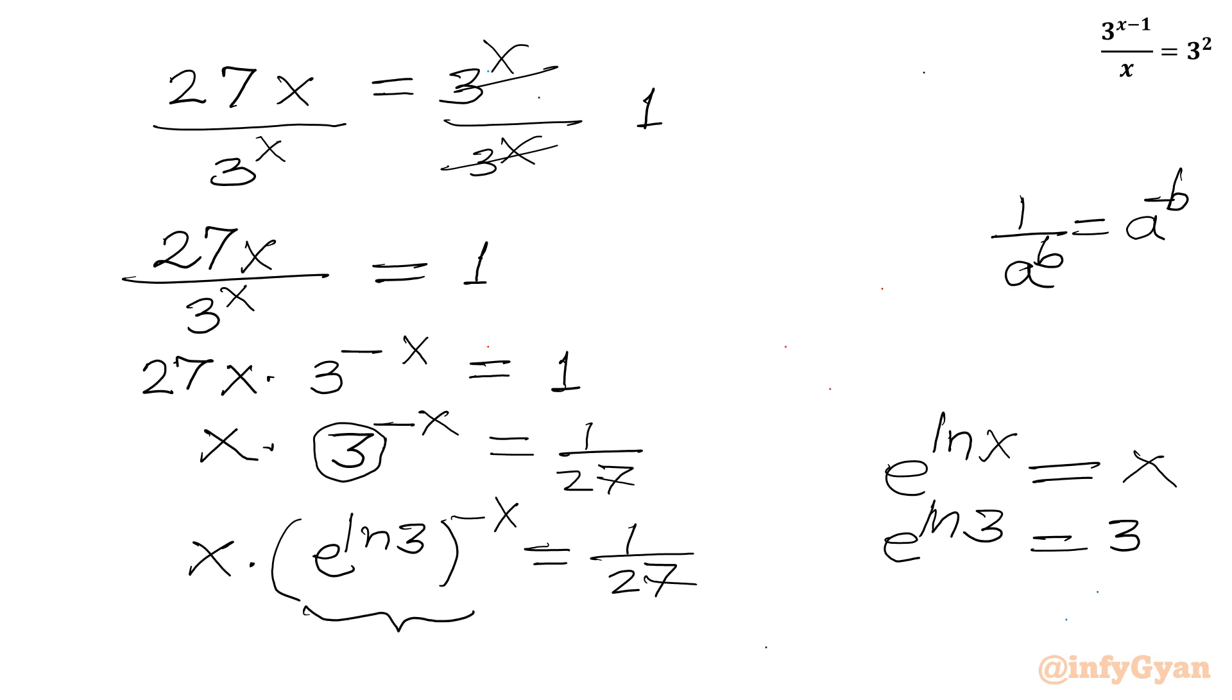Now here I will write one property: a to the power of b, whole to the power of c, equals a to the power of b times c. So we can multiply both the powers ln 3 and minus x. Let us write x times e raised to the power of ln 3 times minus x equals 1 over 27.